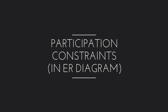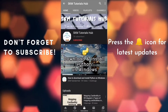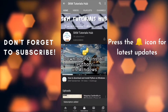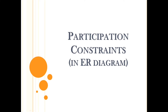Today's topic is Participation Constraints in ER Diagram. In the last video, we learnt about Mapping Cardinality in ER Diagram. If you haven't seen that video, watch it from the link in the description box. Mapping Cardinality tells us the maximum number of entities that can relate to each other through a relationship set. But in some situations, some rules are enforced on the cardinality. Today we will discuss about these rules.